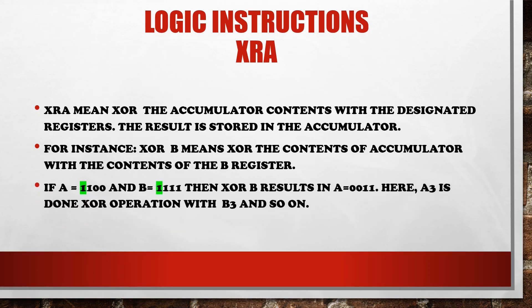If A equals 1100 and B equals 1111, then XRA B results in A equals 00011. Here A3 is XORed with B3, as shown by the green color. As you know, in XOR operations, when the values are the same the result is 0, and when the values are different the result is 1. This is all about the XRA logical instruction of SAP 2.